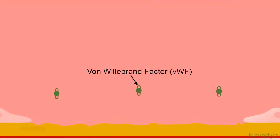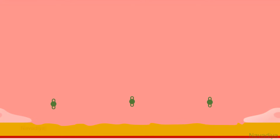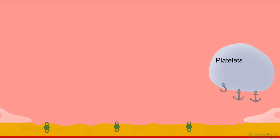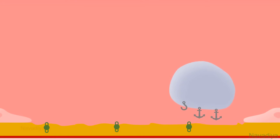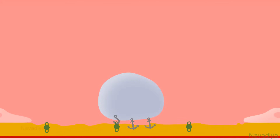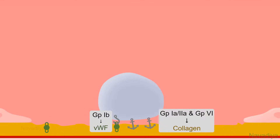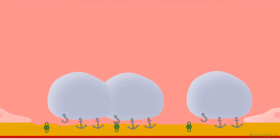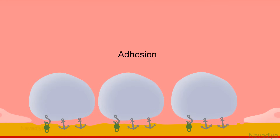The damaged endothelial cells release von Willebrand factor, which binds with collagen that is exposed to the blood. Now in blood, we have platelets flowing closer to the vessel wall. They have glycoprotein 1b, glycoprotein 1a2a, and glycoprotein 6 on their surface. Through these receptors, the platelet attaches to the exposed collagen. Glycoprotein 1b binds via von Willebrand factor, and glycoprotein 1a2a and glycoprotein 6 bind directly with collagen. More platelets come and cover the damaged area. This is called platelet adhesion.